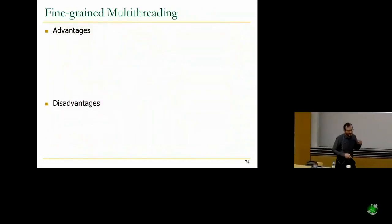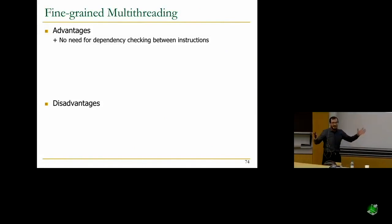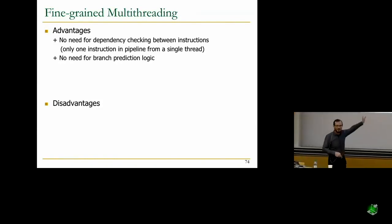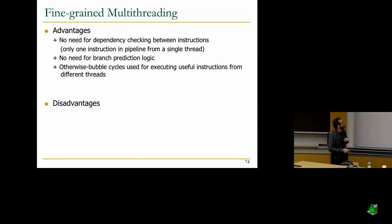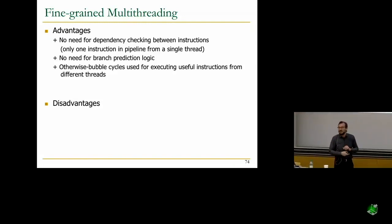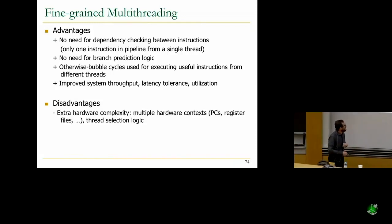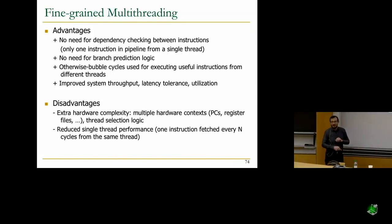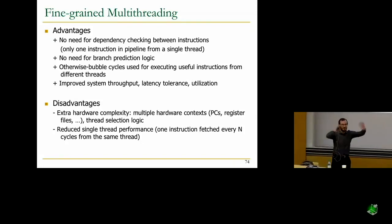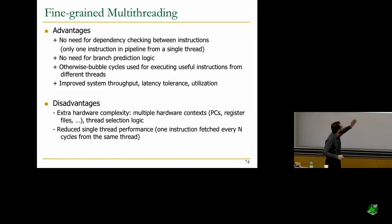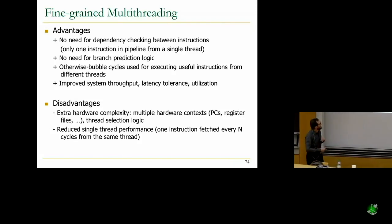The big advantage is there's no need for dependency checking for anything within a single thread — only one instruction in the pipeline from a single thread — and no need for branch prediction logic. GPUs are elegant because they lack that branch prediction and dependency-checking complexity, though they have other complexities in the memory system. Otherwise, bubble cycles are used for executing useful instructions from different threads, improving system throughput, latency tolerance, and utilization. The disadvantages are extra hardware complexity and reduced single-thread performance. You should not do this if you're Intel, relying on general-purpose performance — but you can if you're building a graphics engine with many threads to begin with.